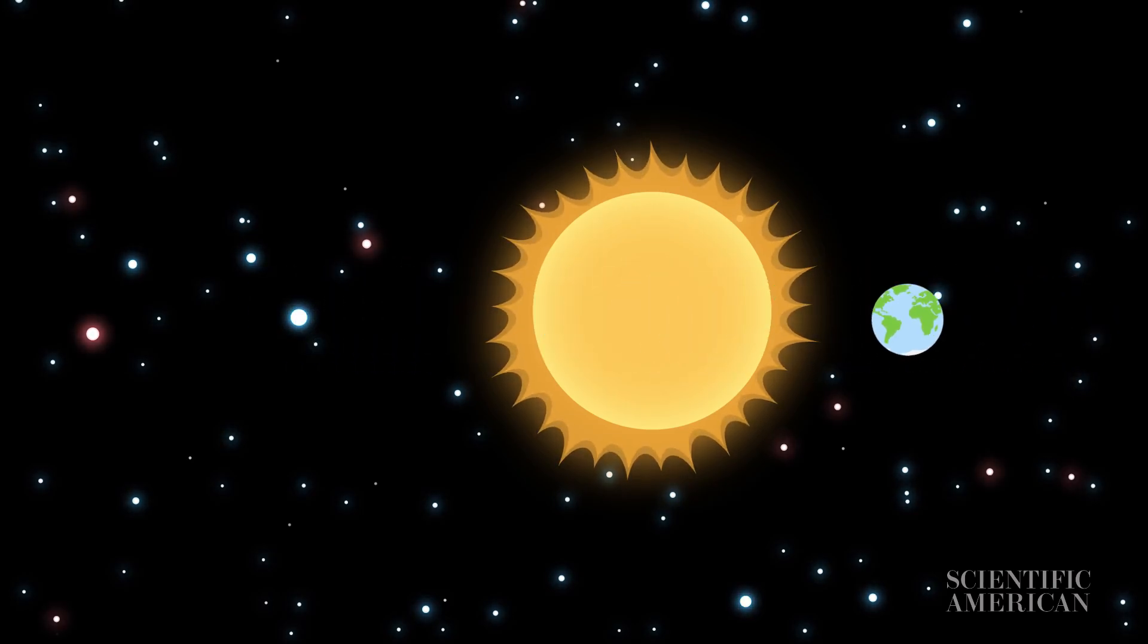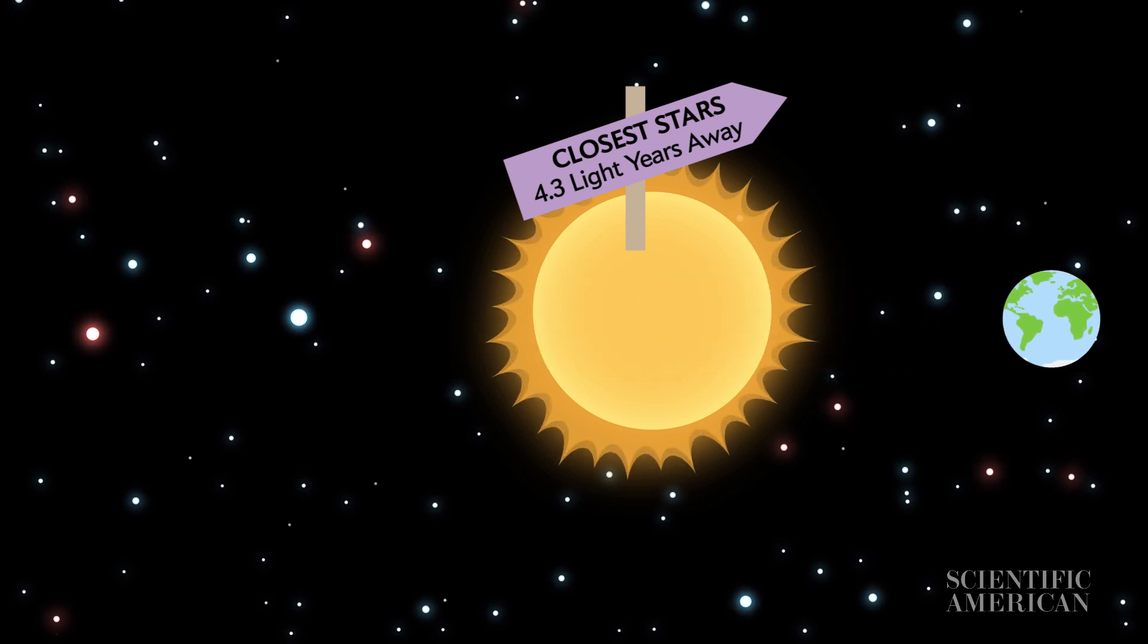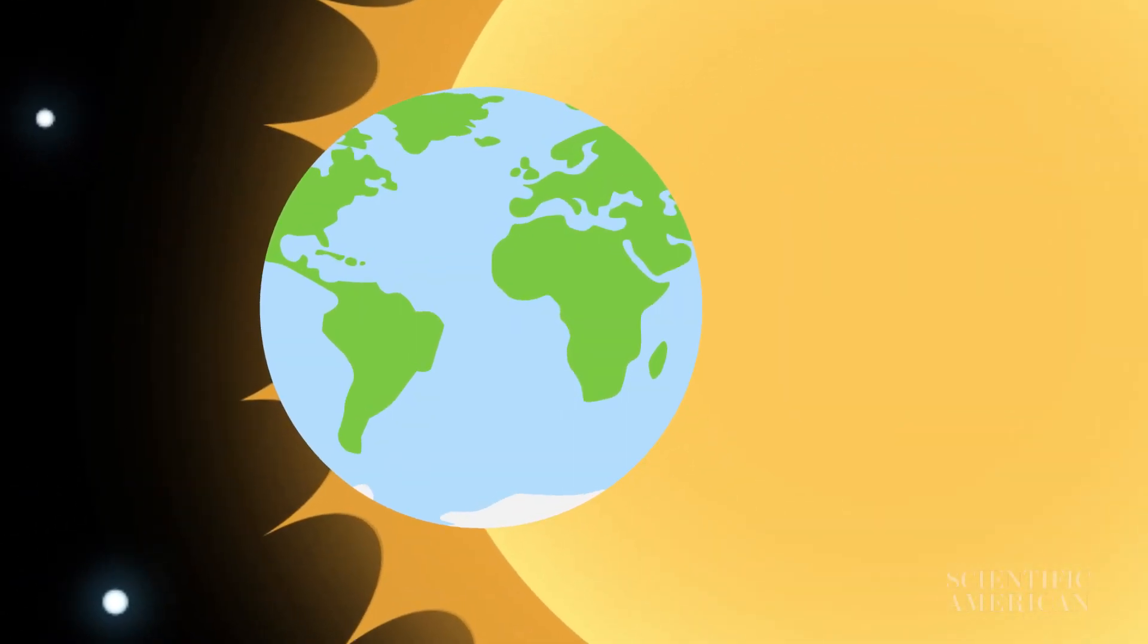The closest stars to our solar system are about 4.3 light-years away from Earth. But how do we know that distance? It seems like measuring a star's distance should be impossible.